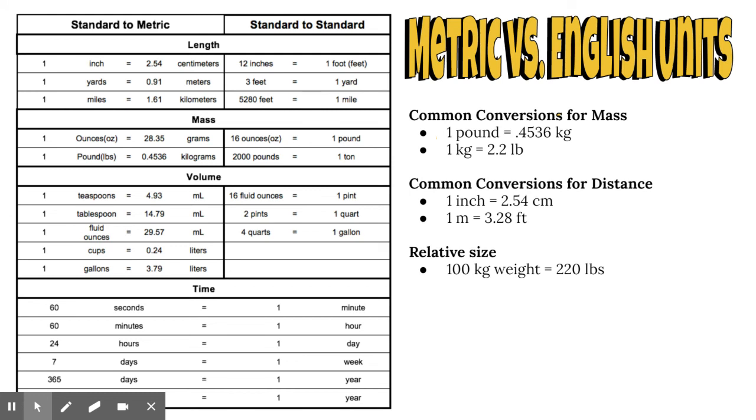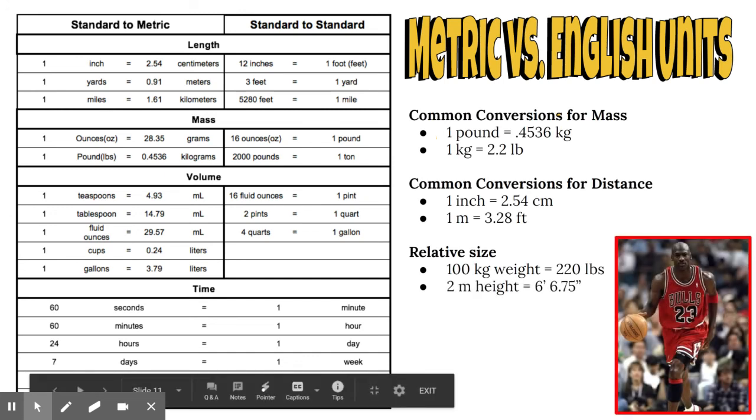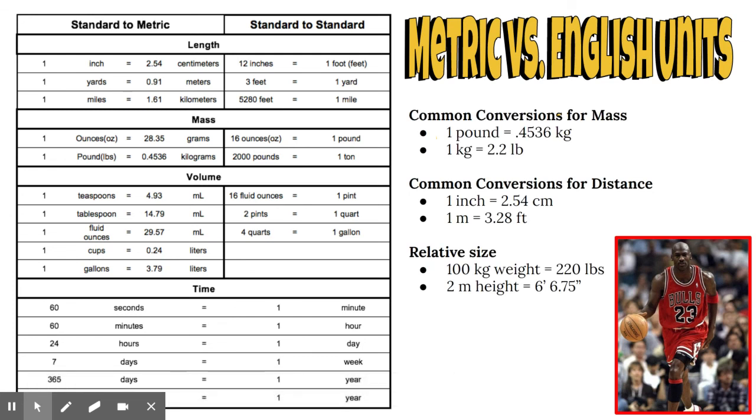If we took something that weighed 100 kilograms, that would weigh about 220 pounds, a pretty big adult. If something is two meters tall, that's about six foot six. If you think about Michael Jordan, he was pretty close to a hundred kilograms and really close to two meters. He's a big guy, played in the NBA, about a hundred kilograms and right around six foot six or that two meter height.